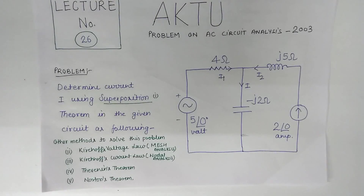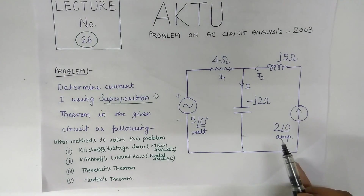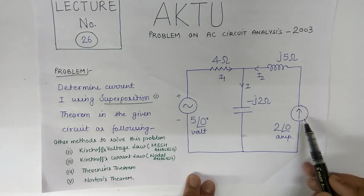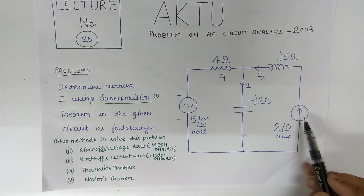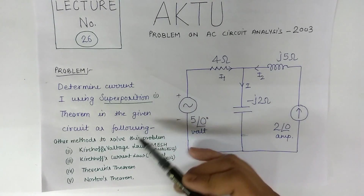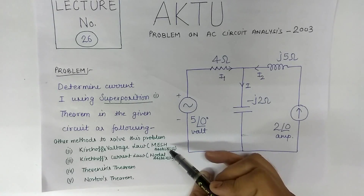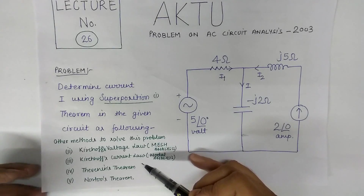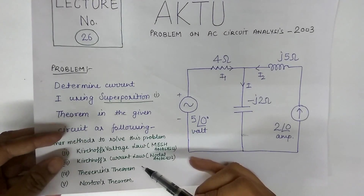Welcome back. Here we are proceeding for lecture number 26, which is the AC circuit analysis. There is an AC voltage source and a current source, both AC. We will solve this question by different methods: first by superposition theorem, then mesh analysis, then nodal analysis, and finally by Thevenin and Norton theorem. This is a very important lecture. So first of all we solve this question by superposition theorem.